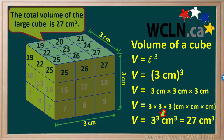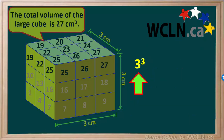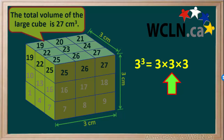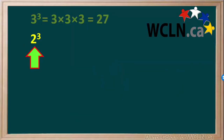3 times 3 times 3 is called 3 cubed, or 3 to the power 3, shown like this. What we've illustrated here is 3 to the power 3, or 3 cubed, is equal to 3 times 3 times 3, or 27. We can also say that 2 to the power 3, or 2 cubed, is equal to 2 times 2 times 2. 2 times 2 is equal to 4, and 4 times 2 is equal to 8.